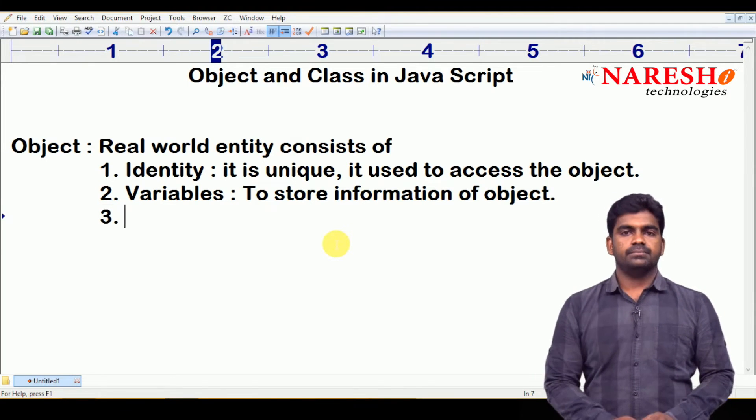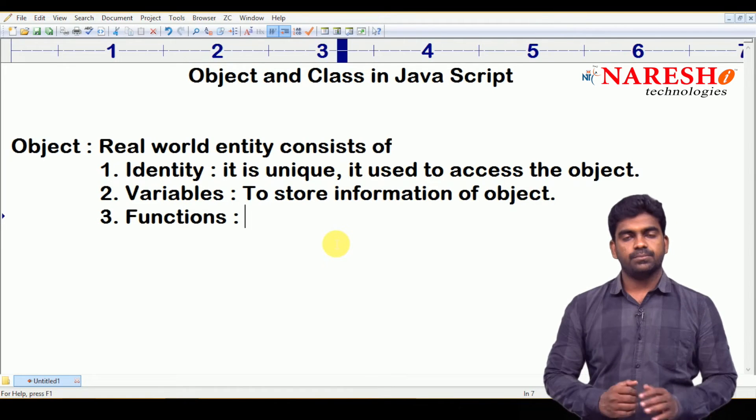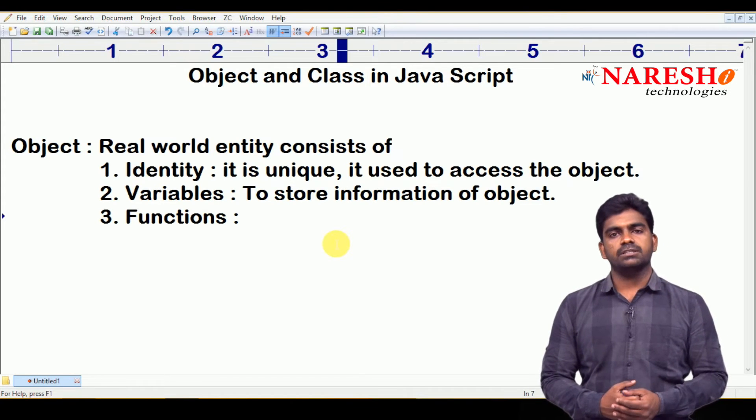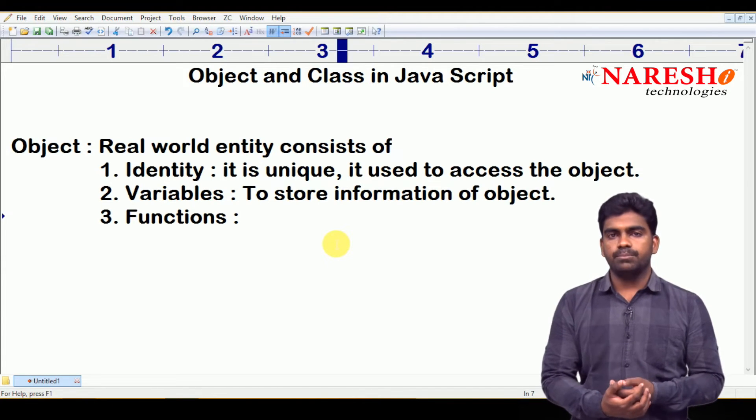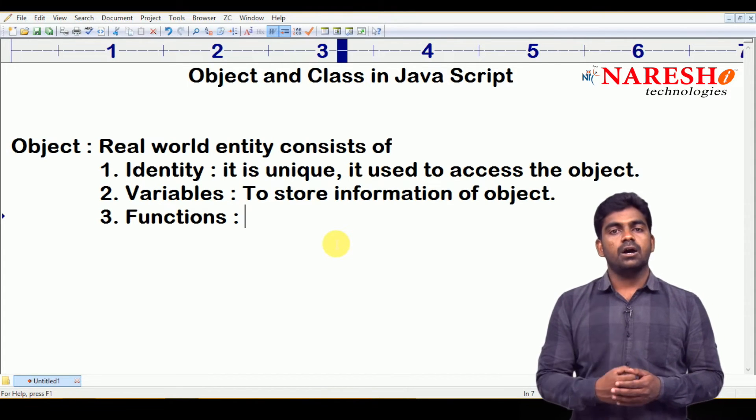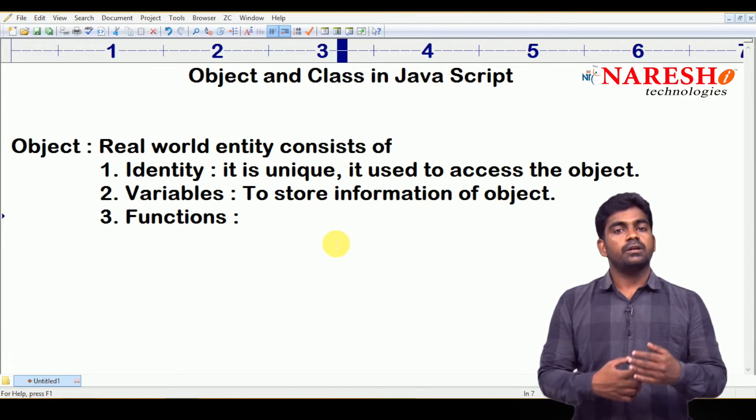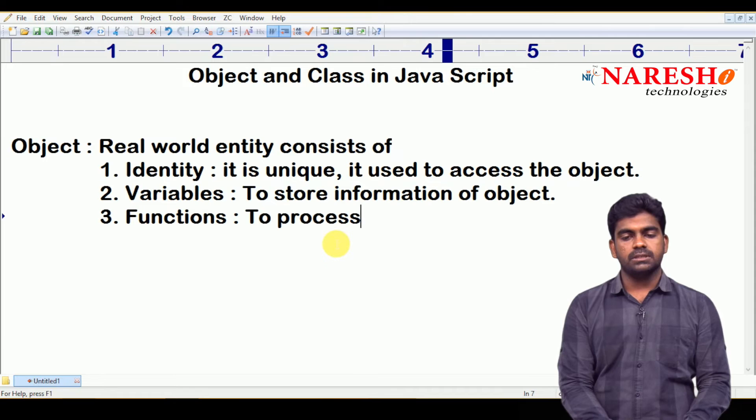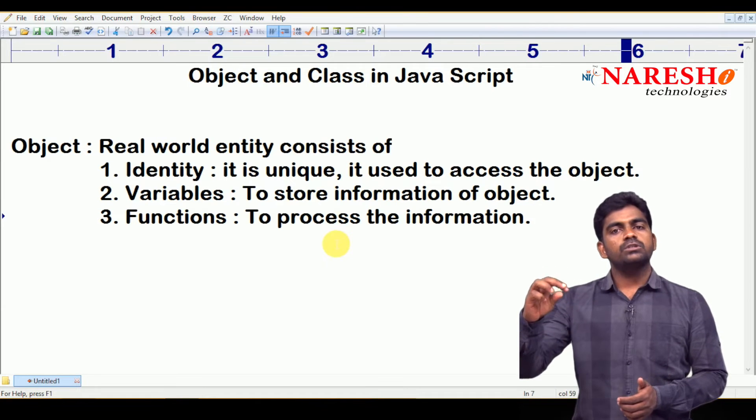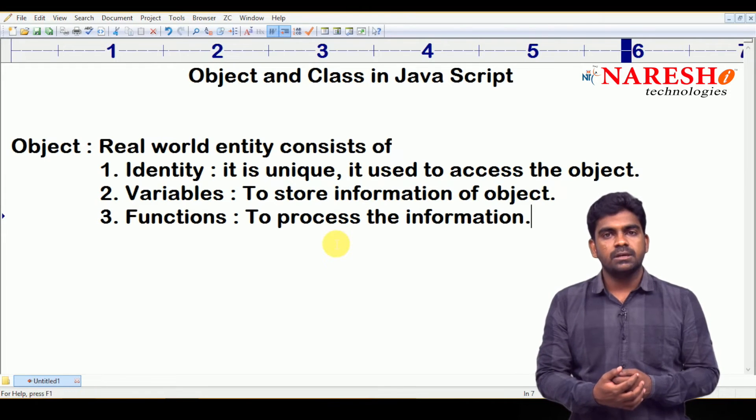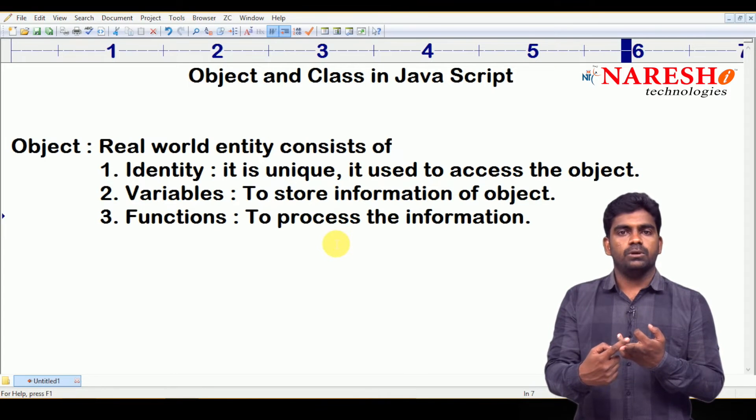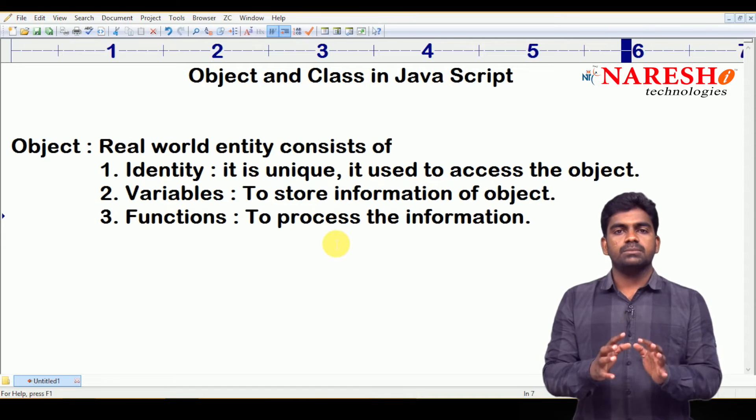And next one, functionality - just functions. We can also call them methods. If it is procedure-oriented programming, we call it a function. Whenever you define the function inside the class, we call it a method. These are technical terms we follow. And it is like a set of methods used to process the data. There is a variable called balance in account. If you want to change the balance, how to change the balance? Either we withdraw some amount or we deposit some amount, we transfer some amount. So deposit, withdraw, transfer, all these things come under functions.